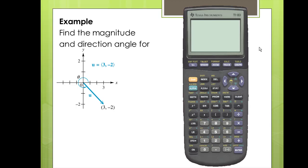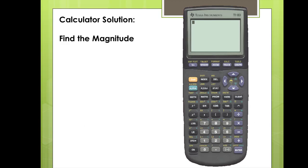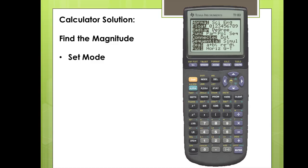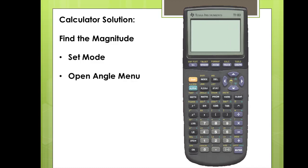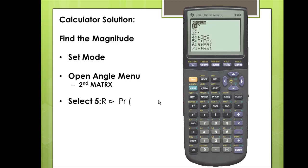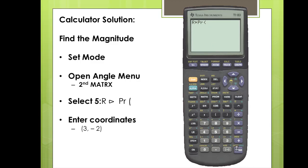Let's look at an example. We'll find the magnitude and the direction angle for our vector u. First we'll set the mode on our calculator — I'll press mode and change to degree mode, then return to the home screen. Next we'll open the angle menu using second and matrix, then select the fifth option. We input the rectangular coordinates 3, negative 2, and we get u equal to 3.61.